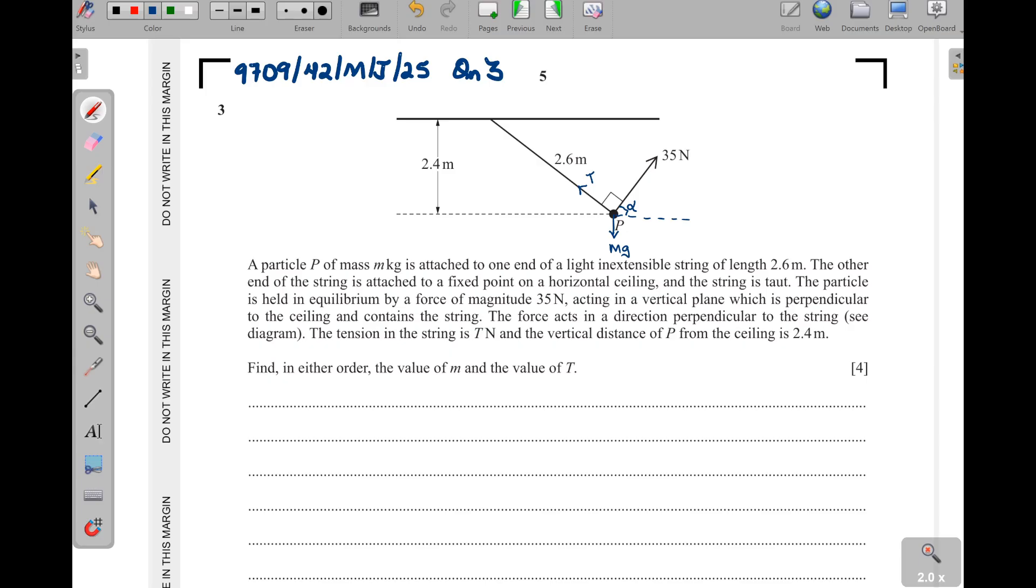Remember, closing in is cosine. That means the horizontal component of this 35 Newton force is going to be 35 cosine of alpha, and then there will be this one, the vertical force here, the vertical component of the 35 Newton force, so it will be 35 sine of that alpha.